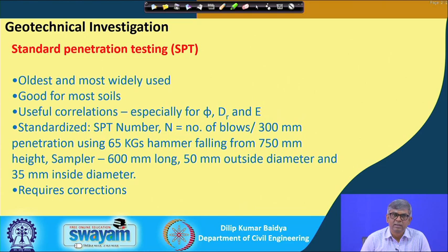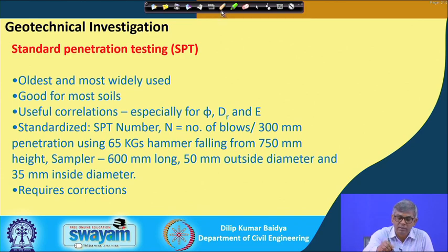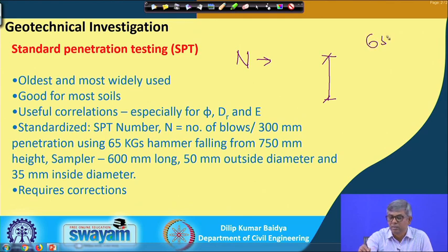If you can conduct the test in the field and get the data, you will immediately be able to correlate the soil parameters without much difficulty. It is very much standardized. The SPT number N is defined as the number of blows per 300 millimeters of penetration, using a 65 kilogram hammer falling from a height of 750 millimeters.